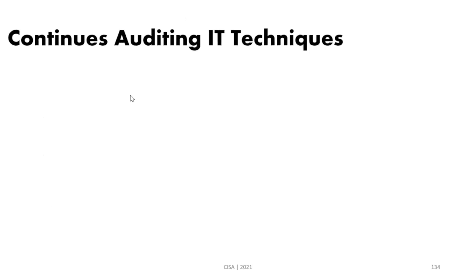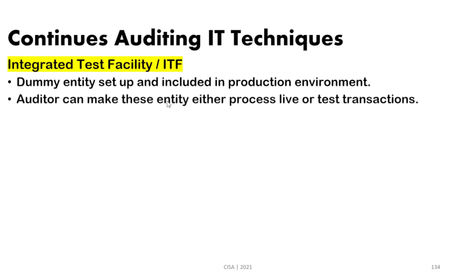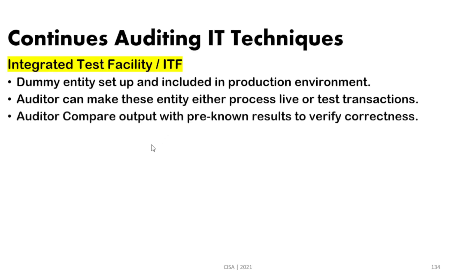There are five techniques for continuous auditing. The first is the integrated test facility (ITF). ITF is a dummy entity or module inside the production environment of a specific application. An auditor can make this entity process either live or test transactions. The auditor provides data as input, knows in advance what the result should be, processes the data in the ITF, then compares the actual output to verify correctness.